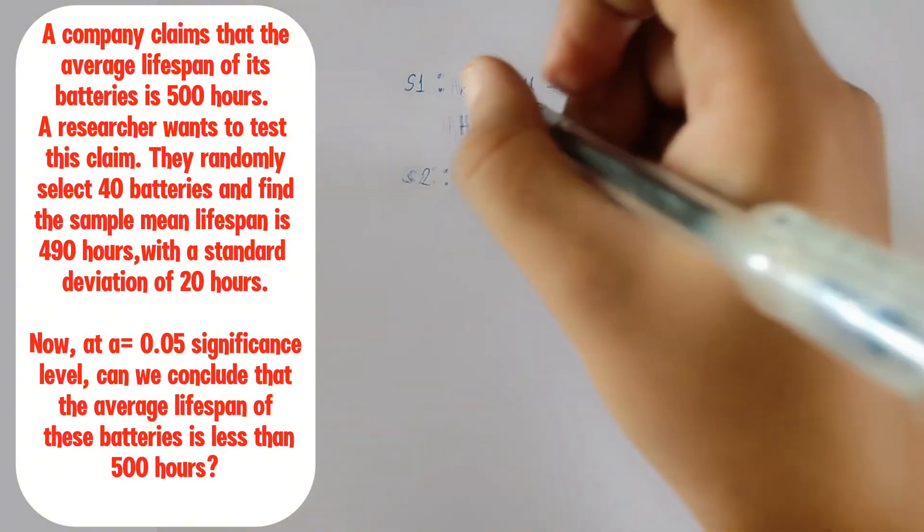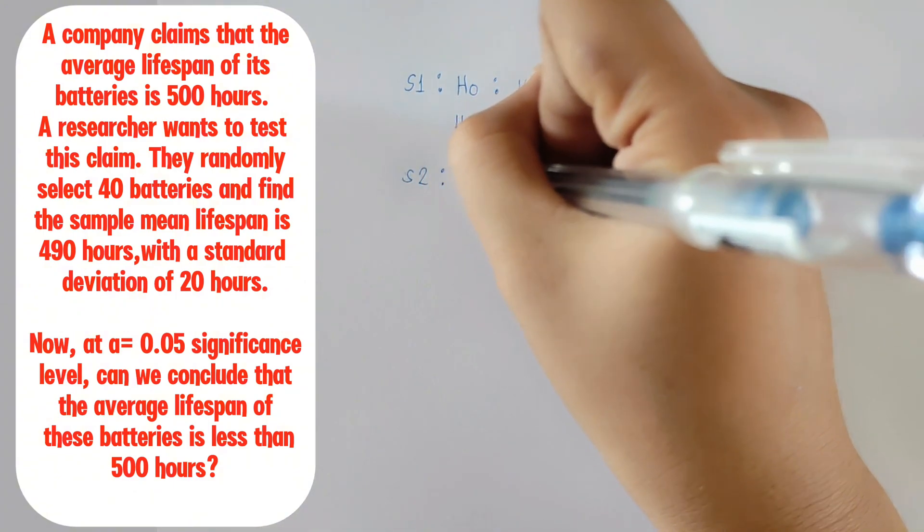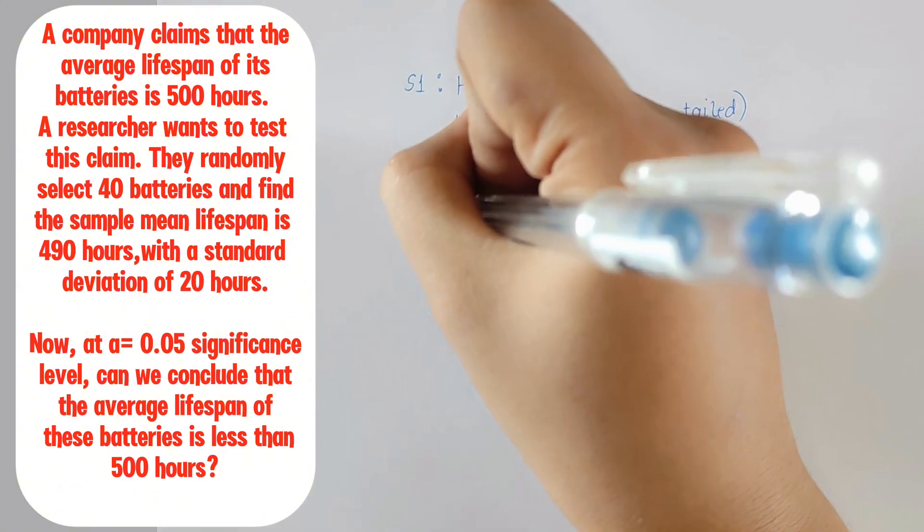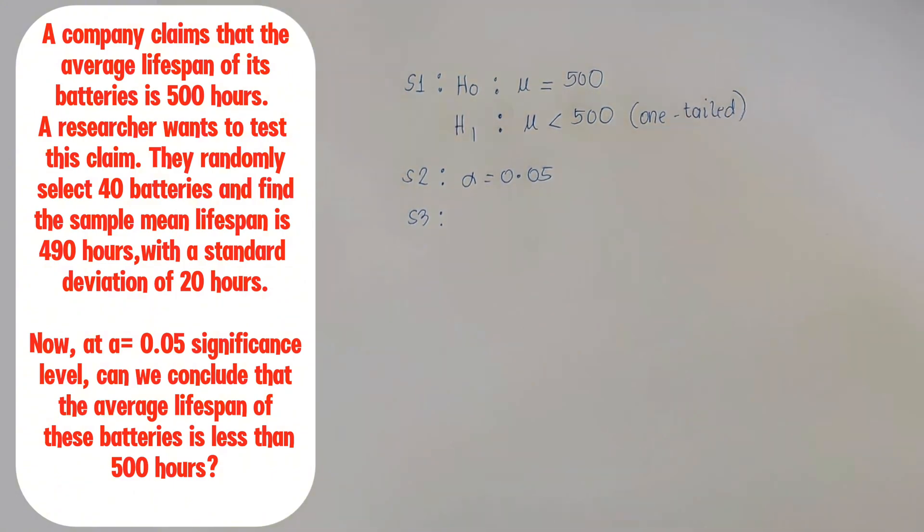Next step is to identify the level of significance which is given as 0.05. This means we're allowing a 5% chance of rejecting the null hypothesis if it's actually true.